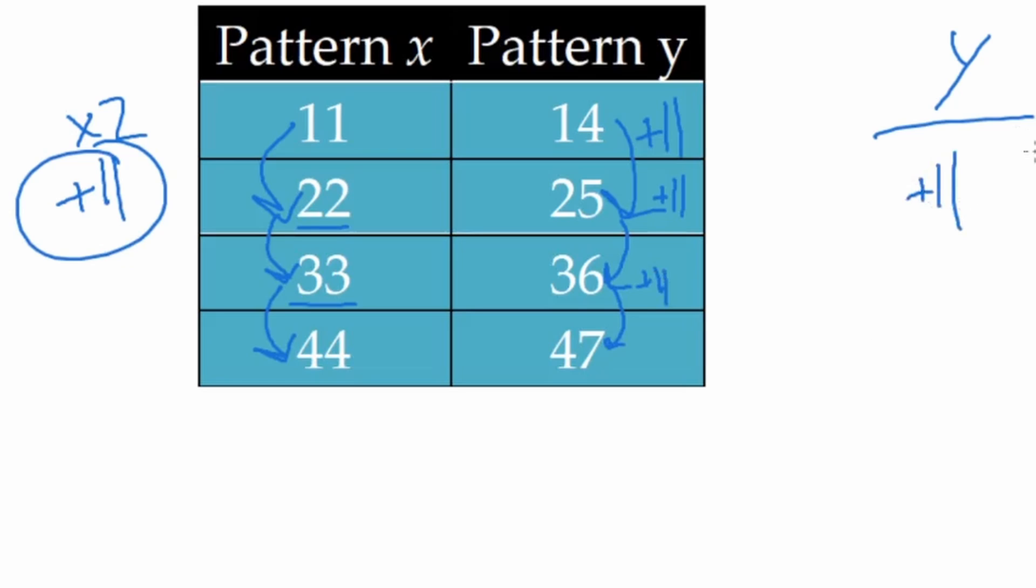Now one way to talk about the relationship between pattern X and pattern Y is that these two patterns have the same rule. They change by the same amount every time. As you go down, they both increase by 11. So what's one relationship that they have? But let's look at another one that they have. The side to side relationship that they have.